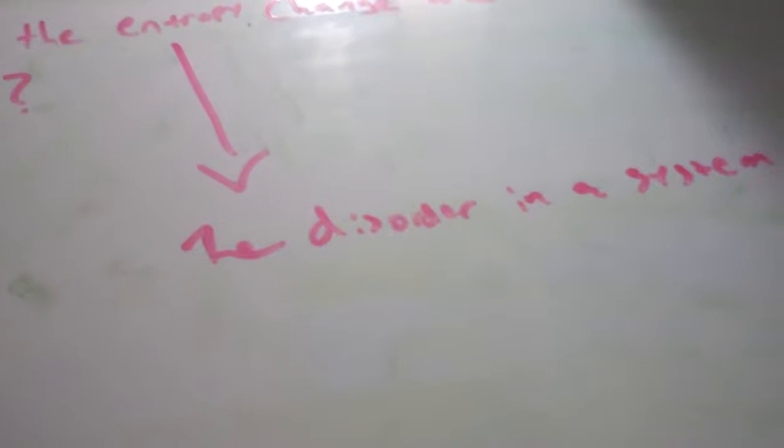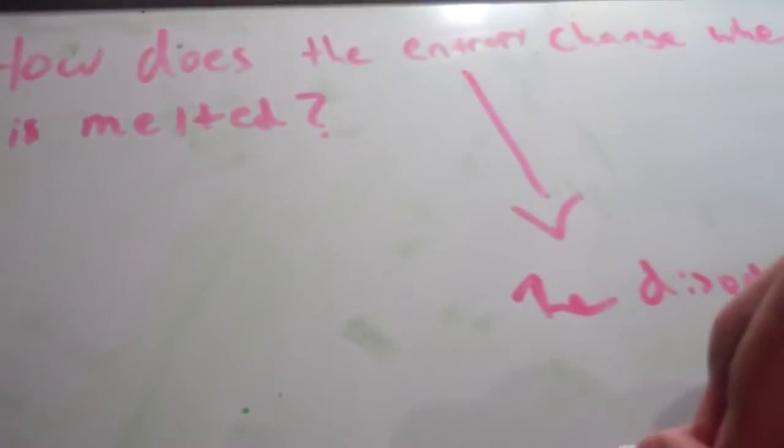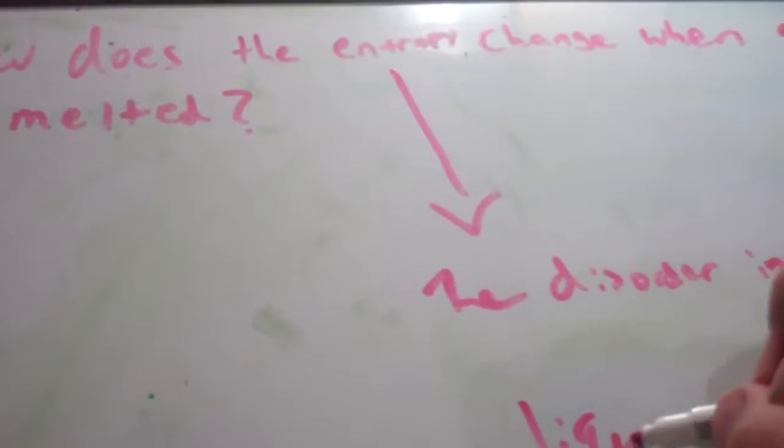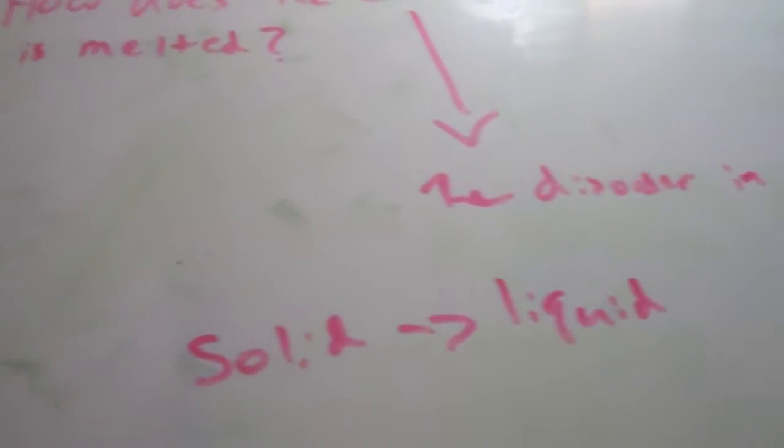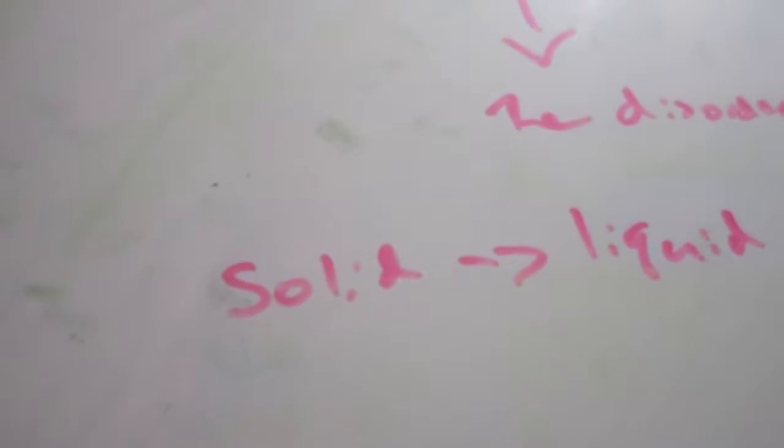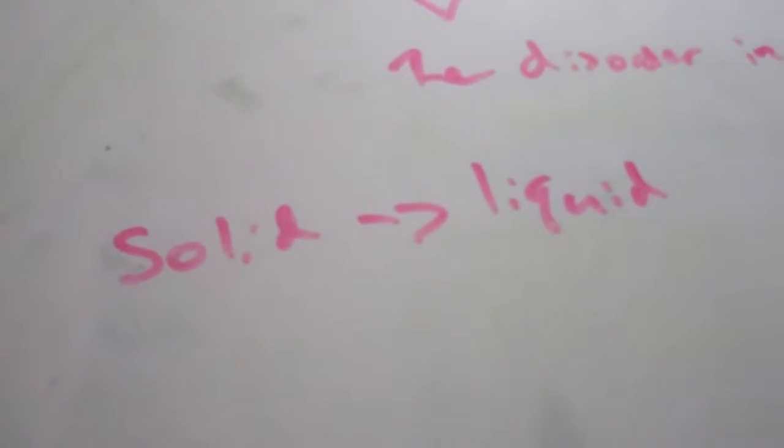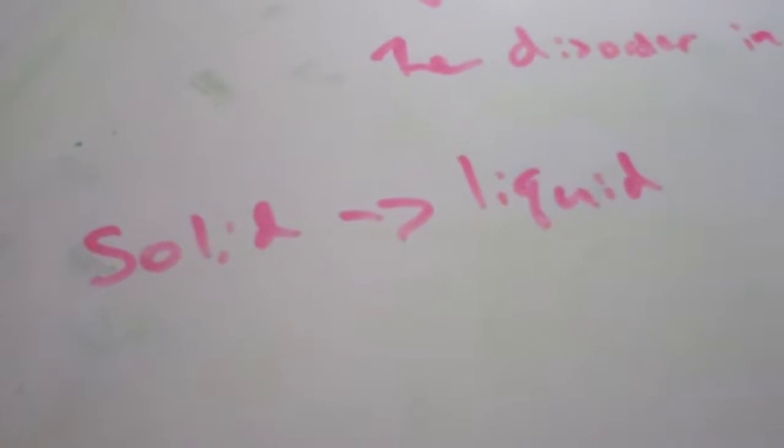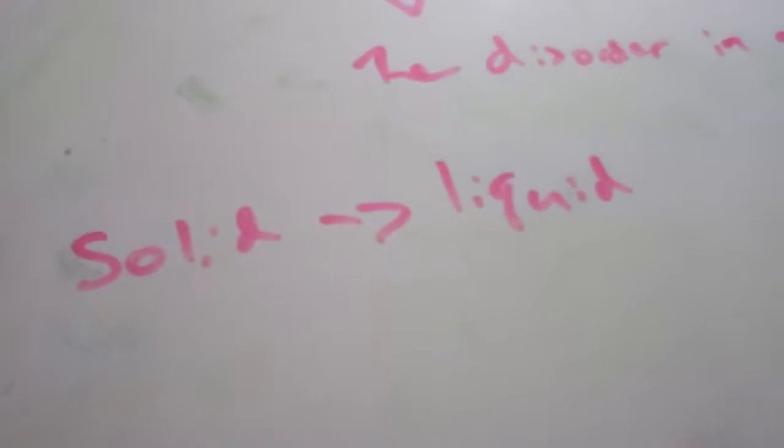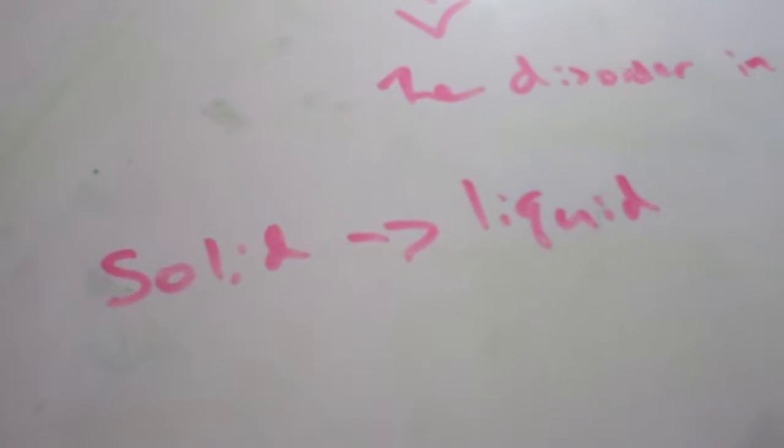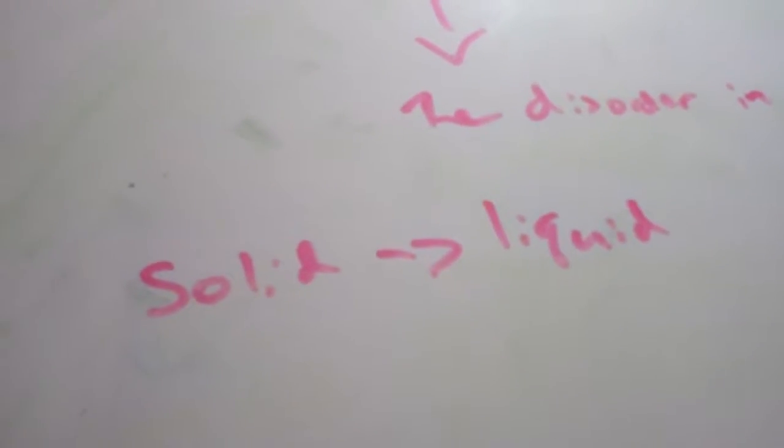You'll see what we mean by this in a little bit. If a solid is melted into a liquid, the atoms or molecules in a solid are really uniform and organized. But when it's melted into a liquid, they get a little more disorganized because the molecules are floating around—they're a little less organized, more chaotic. Therefore,